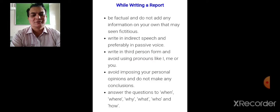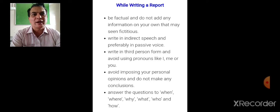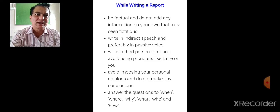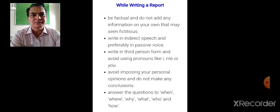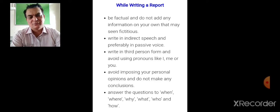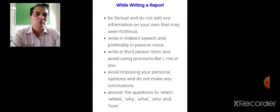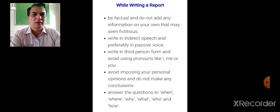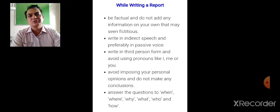When writing a report, the language must be formal and factual. Don't add any information on your own. Write in indirect speech and preferably in passive voice. Write in third person form and avoid using pronouns like 'I'. Use the kind of language found in newspapers or magazines. Avoid imposing your personal opinions and don't make any conclusions. Answer the questions: when, where, why, what, who, and how.